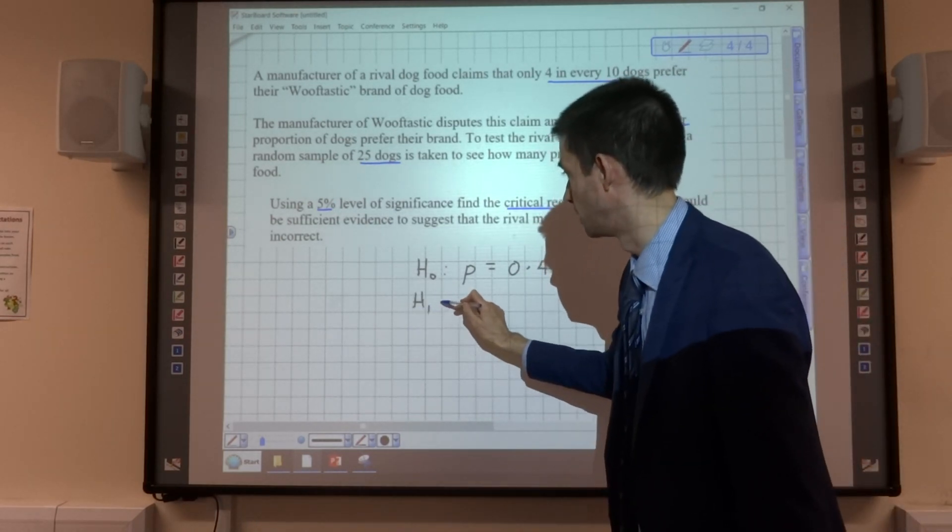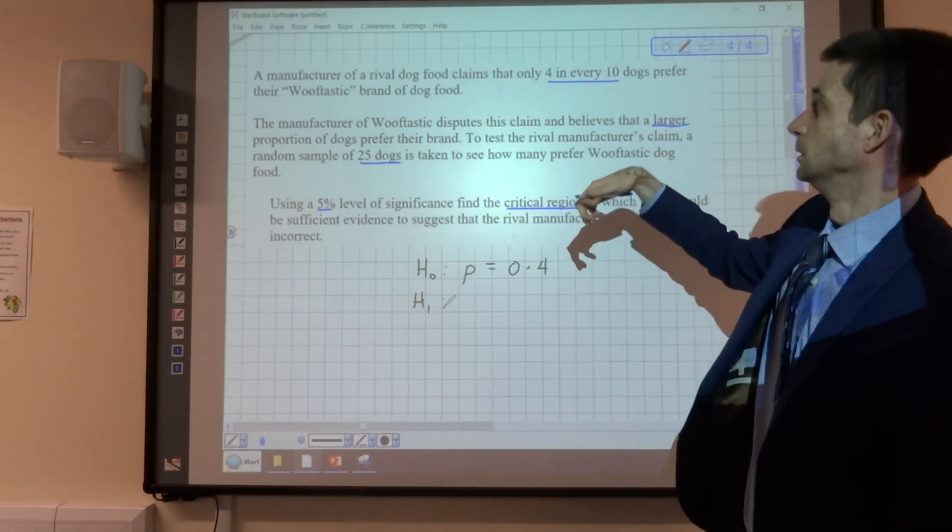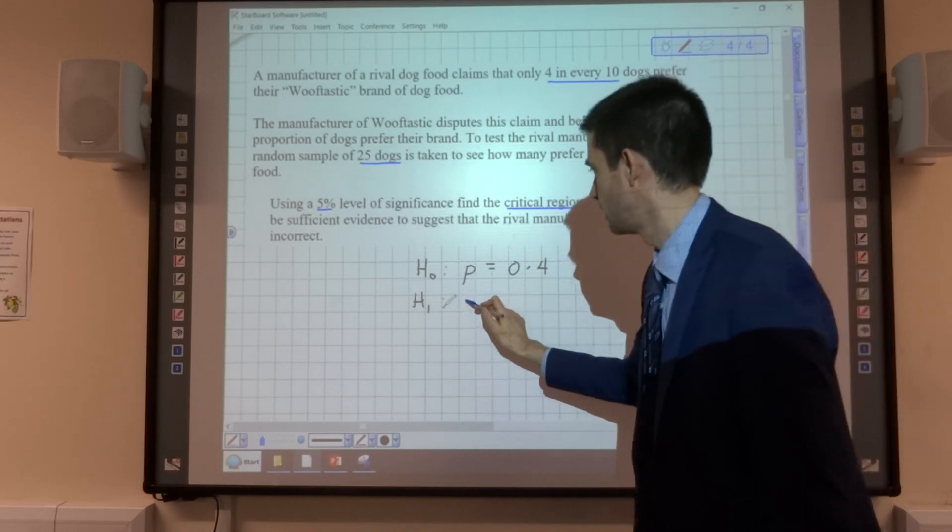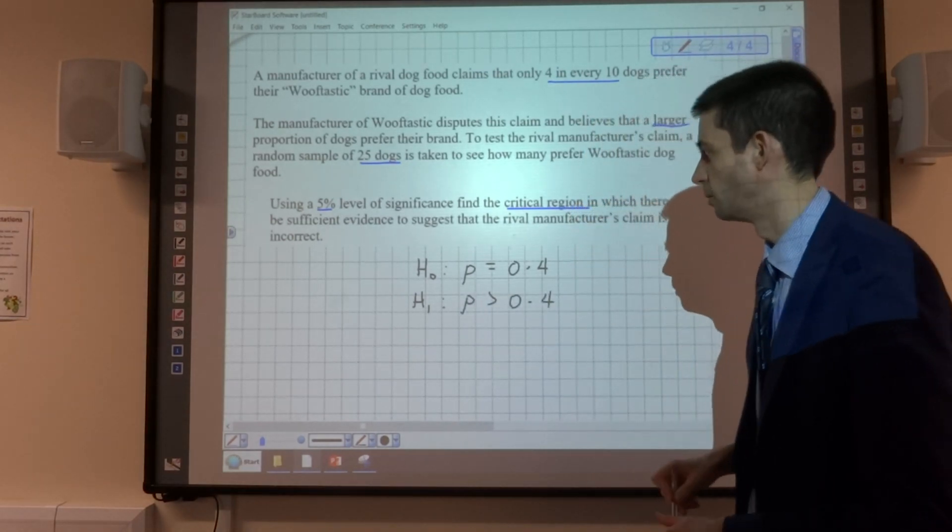And our alternative hypothesis is that the larger proportion prefer it, so that our probability is greater than 0.4.